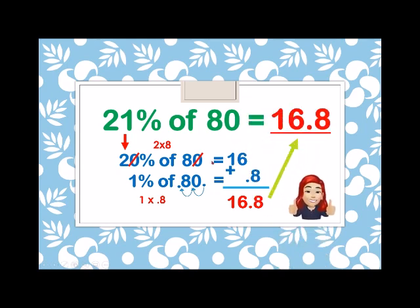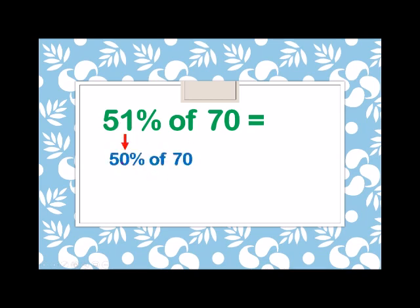Nice. Next, another example. What is the 51% of 70? Again, dividing 51% into two parts, 50% of 70 and 1% of 70. What is the 50% of 70? Cancelling the zero from 50% and the zero from 70, we have 5 times 7, which is equals to 35.